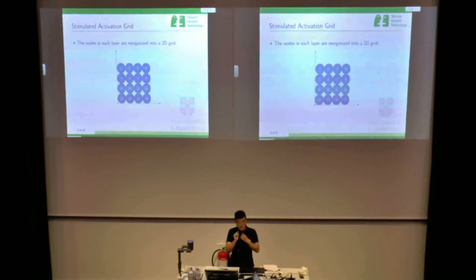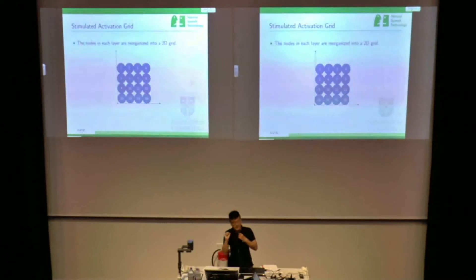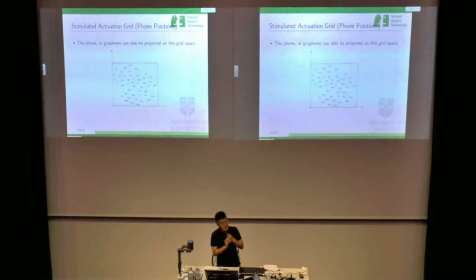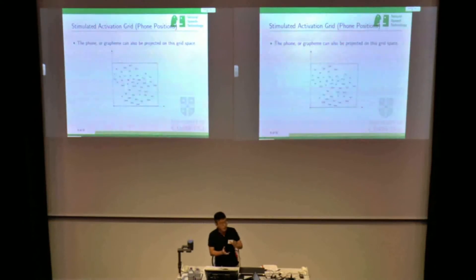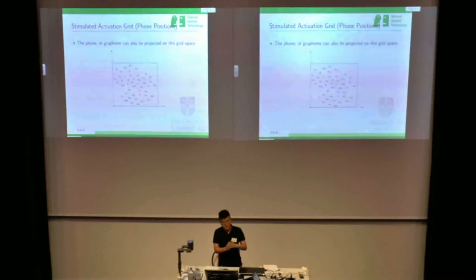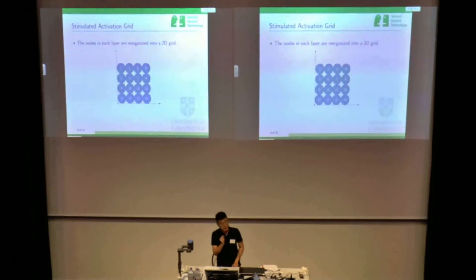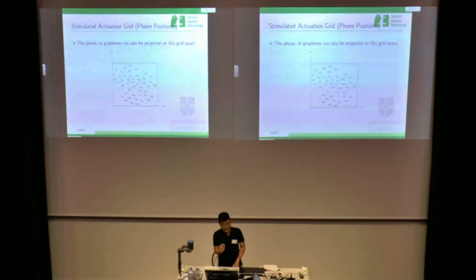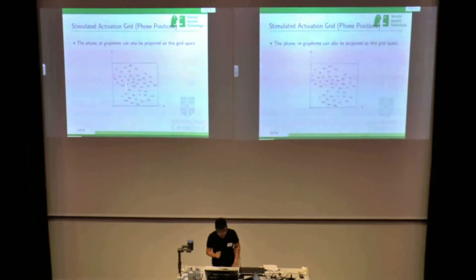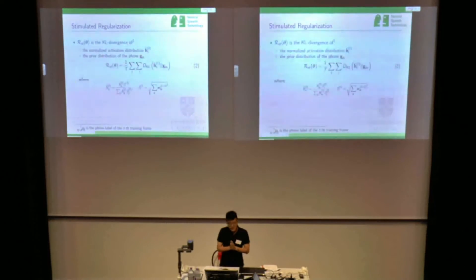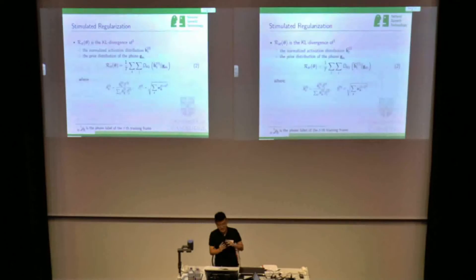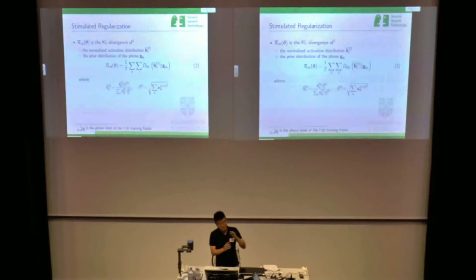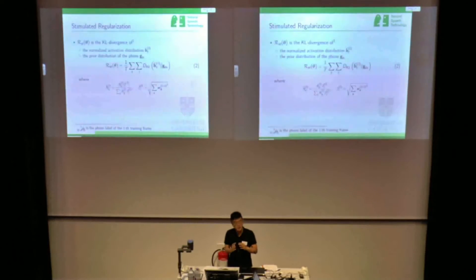We can project it into two-dimensional space and assign a position for each hidden node in this space. At the same time, we can use a dimensionality reduction method to project the phonemes or graphemes into the same two-dimensional space. So in the same space, we have positions for the hidden nodes and also for the phonemes or graphemes.